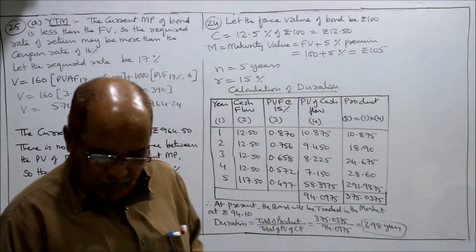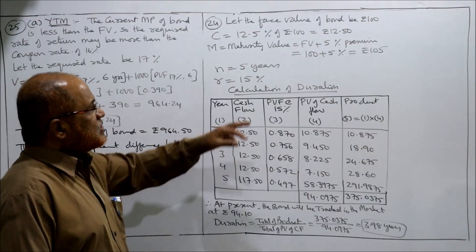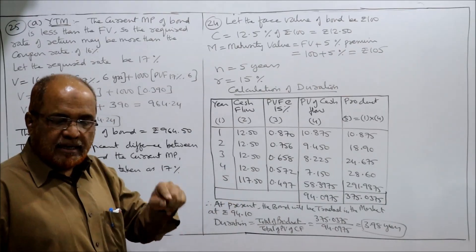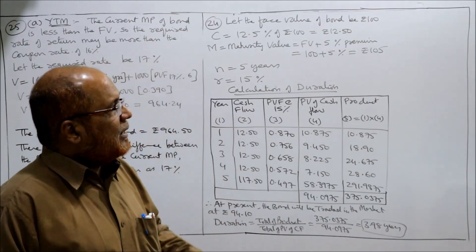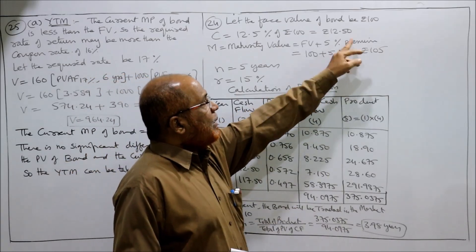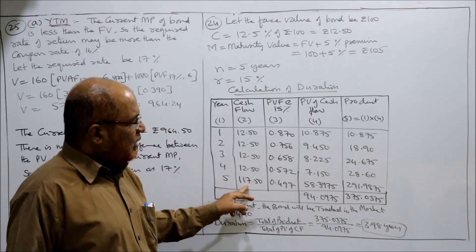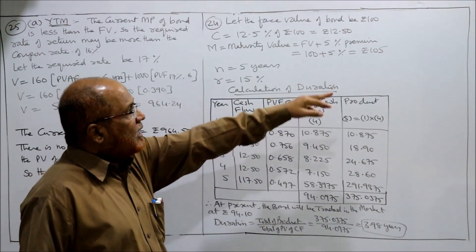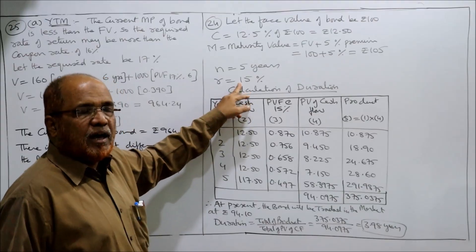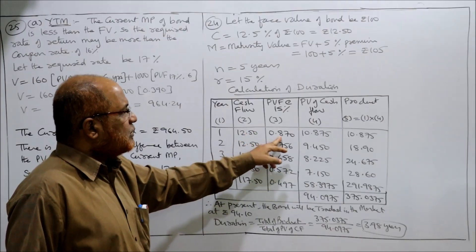In the 24th problem, the cash flow every year is 12.5 rupees (12 rupees 50 paisa). At the end of the year, you get the interest value plus the maturity value. The maturity value is 105 and interest is 12.5, so 105 plus 12.5 equals 117.5. This 117.5 consists of 12.5 interest and 105 maturity value. PV factors are taken at 15% because the required rate of return is given as 15%.